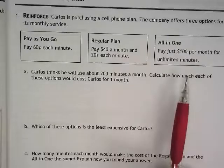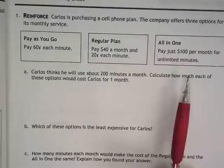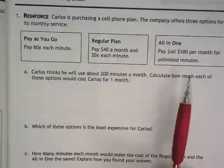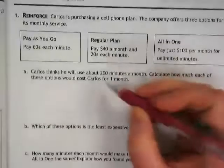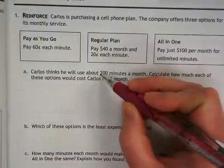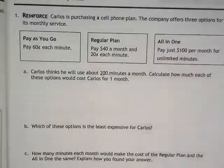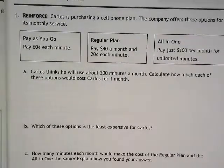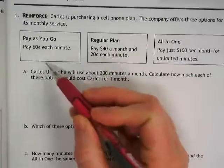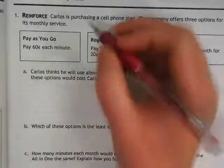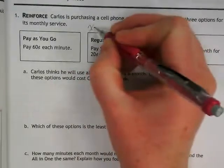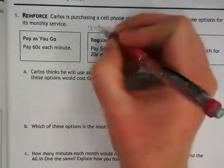Figuring out which is the best plan really depends on how much time he's going to use it, right? He thinks he will use it about 200 minutes a month. Let's start off by writing expressions for each of these. Let's say that x is equal to our minutes.